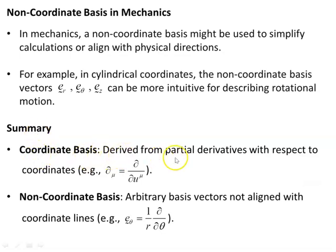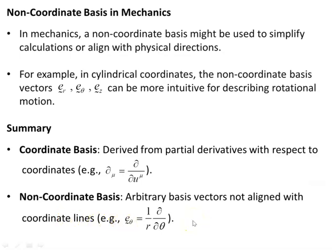To summarize what we have so far: the coordinate basis is derived from partial derivatives with respect to the coordinates, e.g. ∂_μ = ∂/∂u^μ. The non-coordinate basis consists of arbitrary basis vectors not aligned with coordinate lines — for example, e_θ = (1/r)∂/∂θ in cylindrical coordinates, as we saw in that diagram.